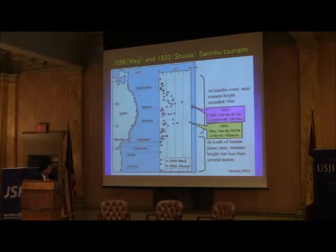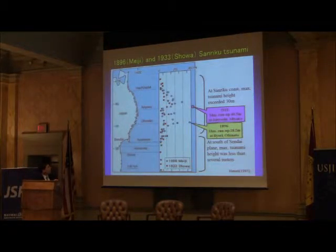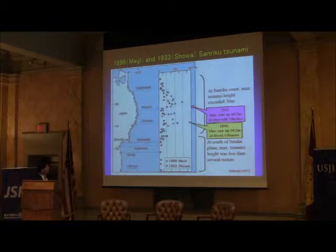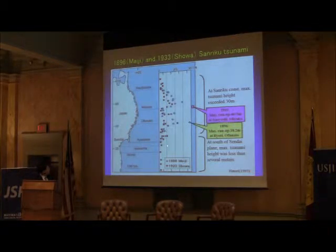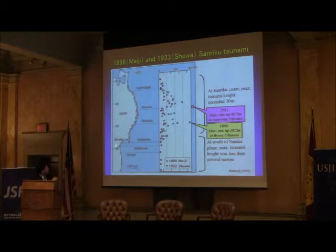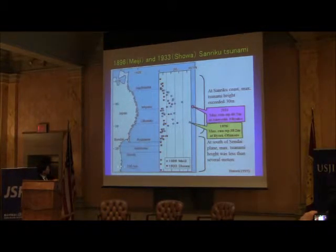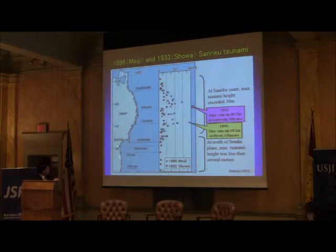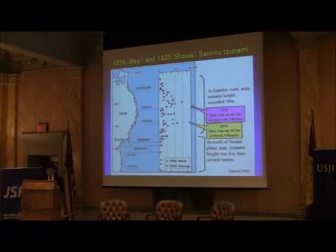But last year's earthquake exceeded 40 meters, renewing that record. Compared to the old two tsunami earthquakes, the most significant difference is the area south of Sendai. The previous two earthquakes did not produce high tsunami in that region, but last year's earthquake also attacked the area south of Sendai City — that is a big difference.